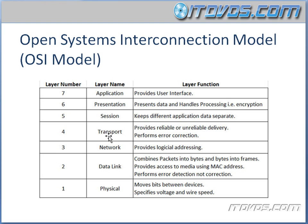Layer four is your transport layer. This provides reliable or unreliable delivery and also performs error correction. The concept of reliable or unreliable will become a lot more clear when we delve into TCP and UDP. Layer four is also responsible for flow control, acknowledgement, and sequencing, and we're going to get into that a lot when we talk about TCP.